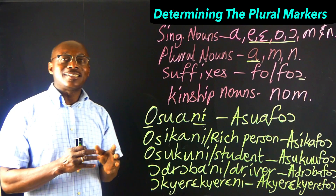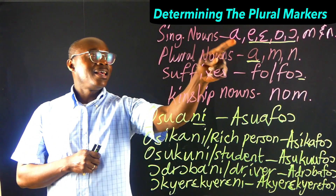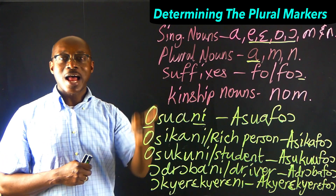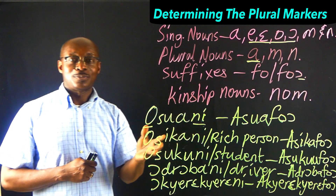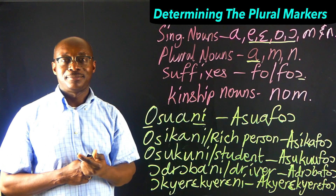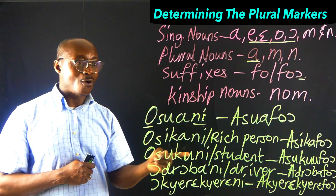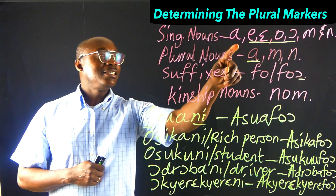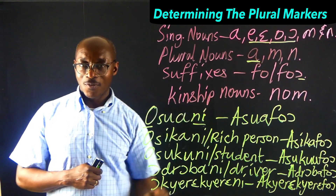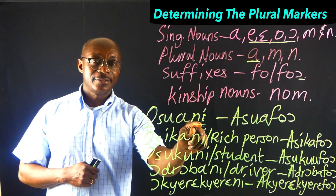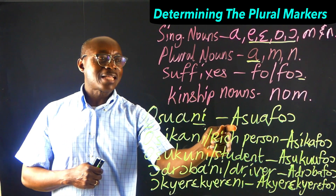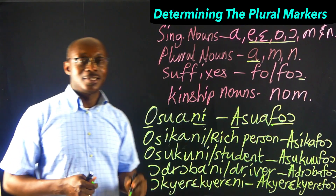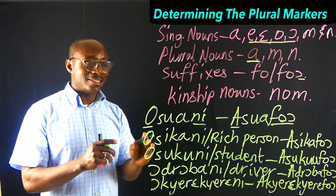In summary: singular nouns with prefixes A, E, O, and O are likely to take prefix A in the plural state — for example, 'adye' in plural form is 'adye,' and 'abo' in plural form is 'abo.' The second point is that the same singular nouns with these prefixes and at the same time with the suffix 'ni,' in the plural state take the prefix A and the suffix changes to 'fo.'